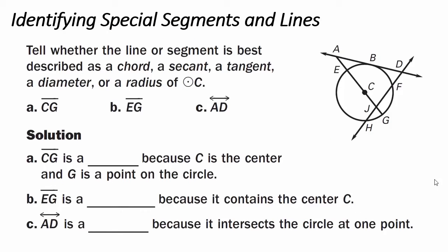Example 1: identifying special segments and lines. Tell whether the line or segment is best described as a chord, a secant, a tangent, a diameter, or a radius of circle C. Line segment CG starts from the center and goes to the end of the circle at G — CG is a radius because C is the center and G is a point on the circle. Line segment EG goes through the center of the circle to the other side — EG is a diameter because it contains the center C. Line AD is outside the circle and intersects it at only one point — line AD is a tangent because it intersects the circle at one point.